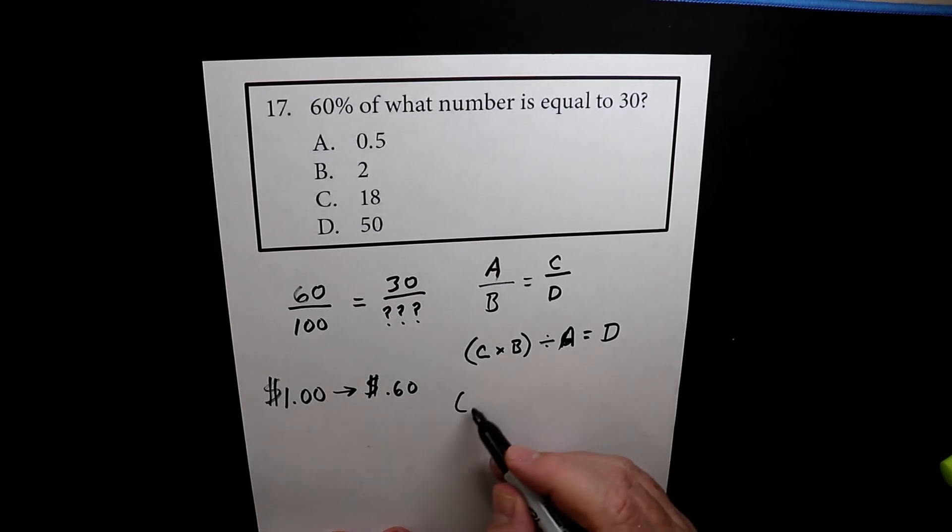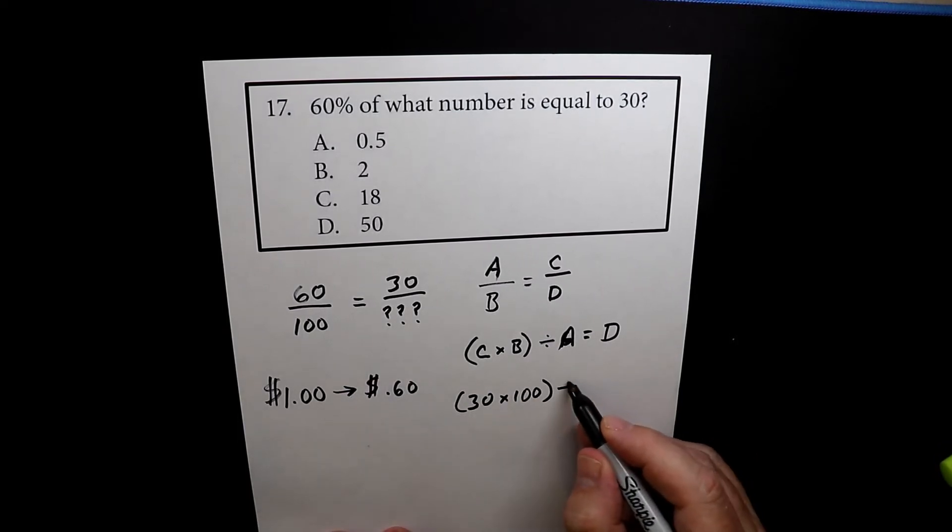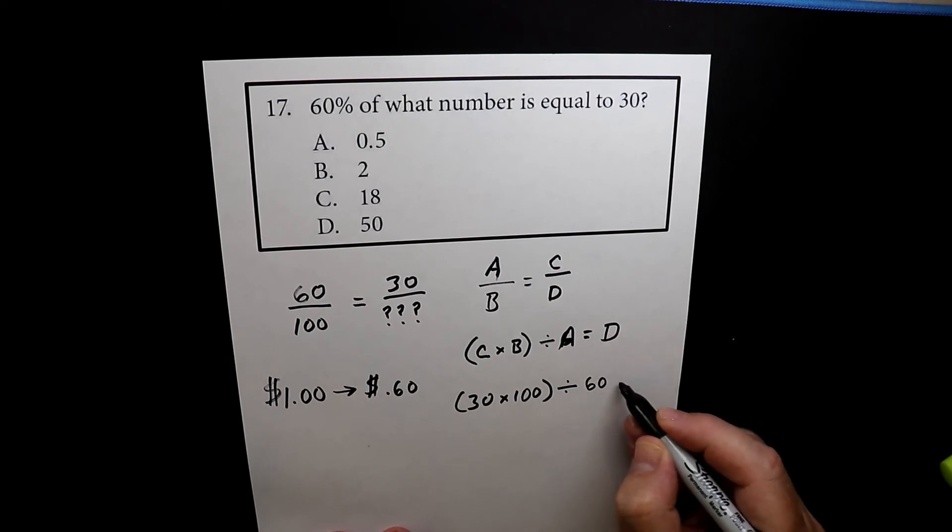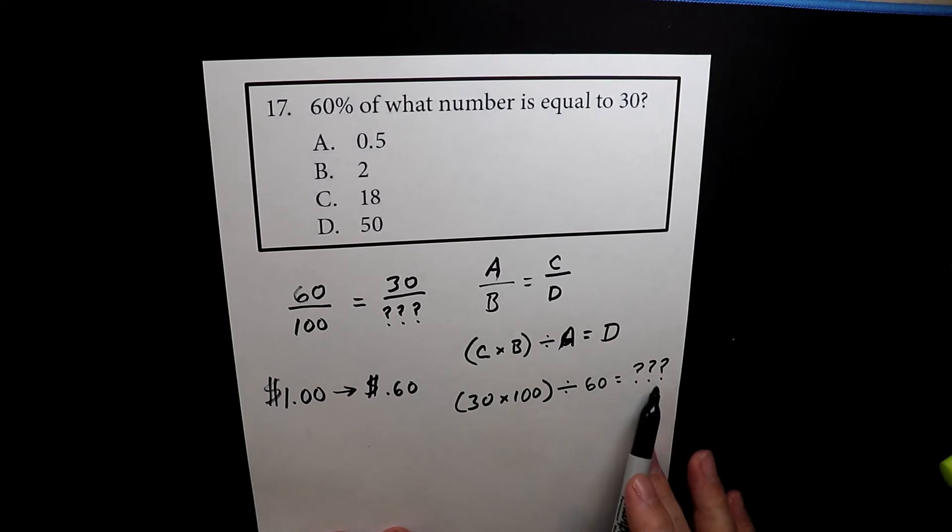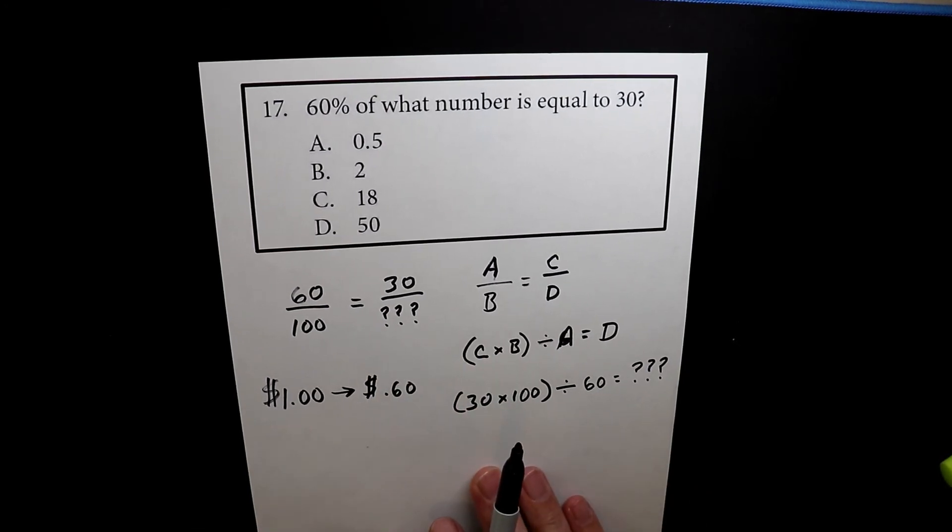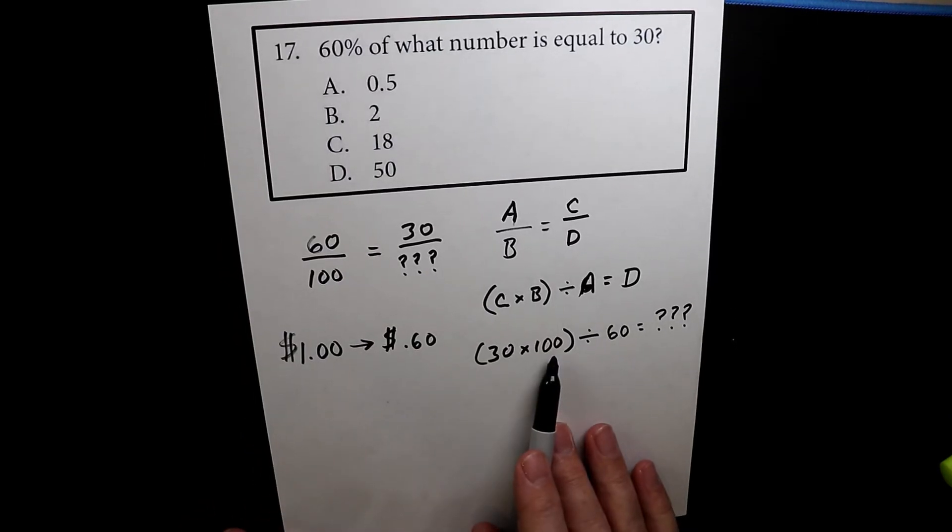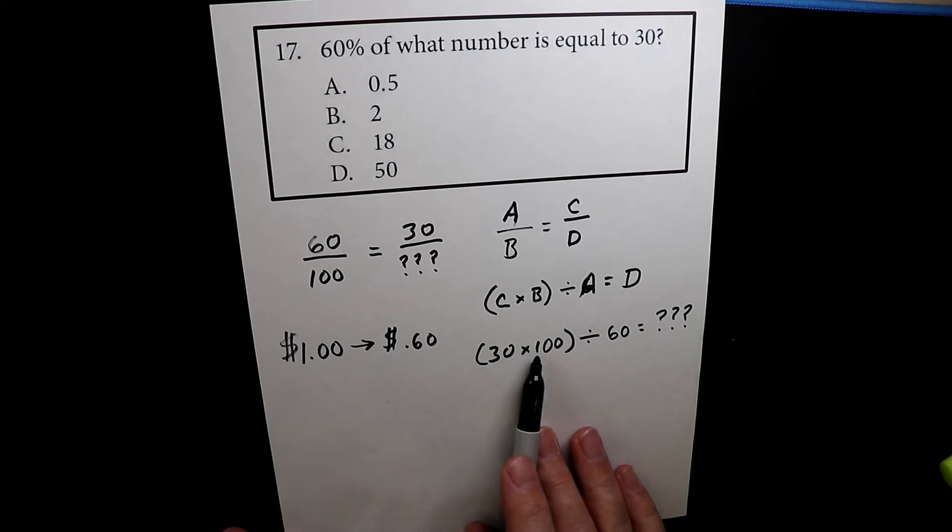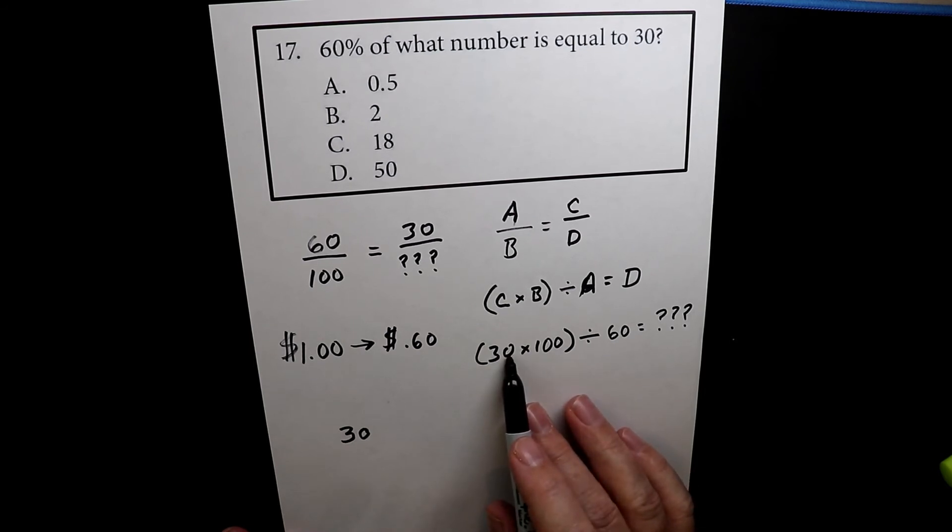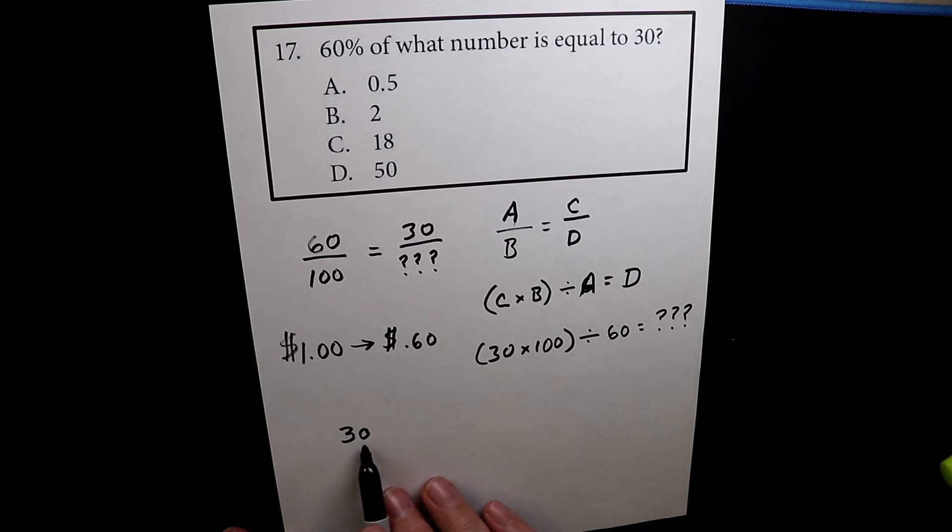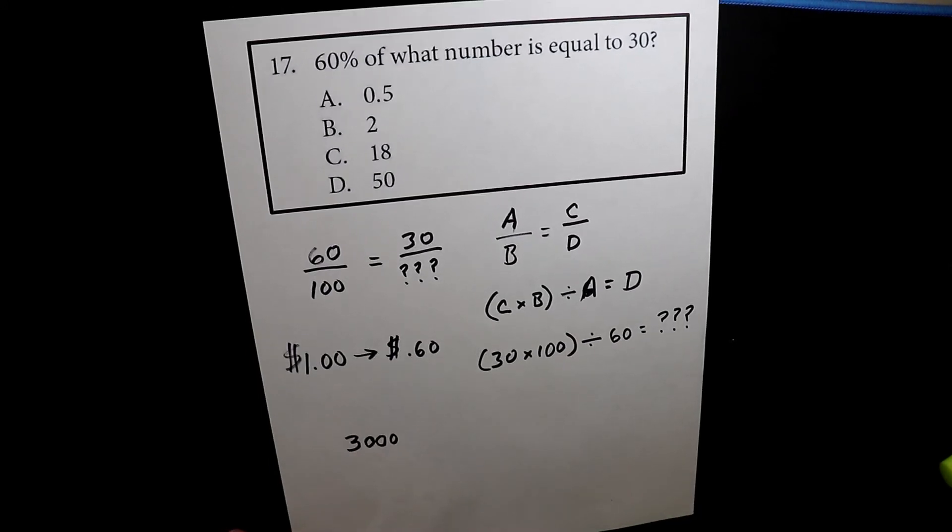So we have C times B, so 30 times 100, and then we're going to divide that by 60 equals we don't know. So that's what we're trying to find is we're trying to find this unknown value over here. So 30 times 100 is 3000 because three times one is three. And then I count the zeros. One, two, three. I got a little excited so I started doing it. So I just count the zeros and I go one, two, three, and I had three zeros at the end. So 3000.